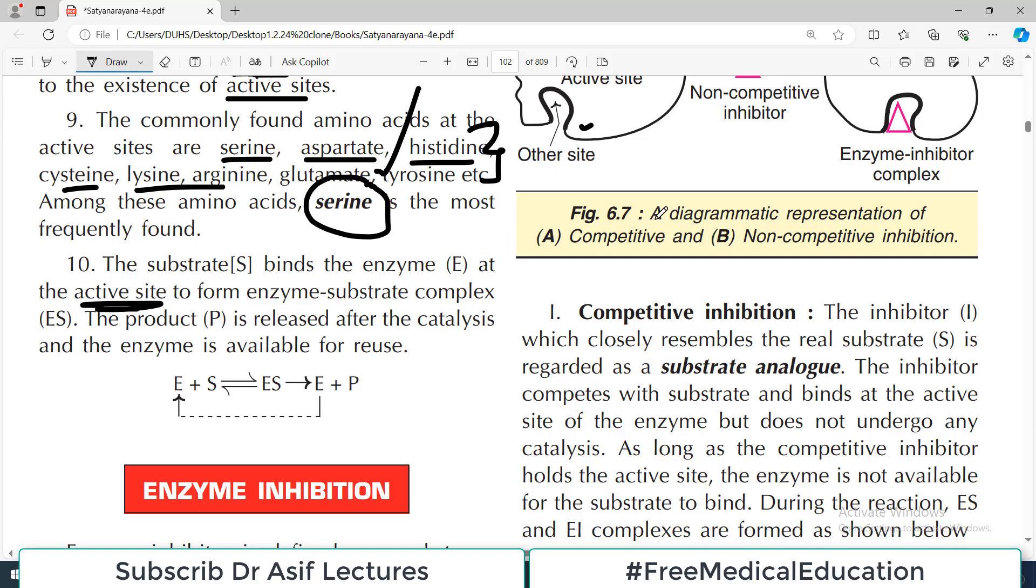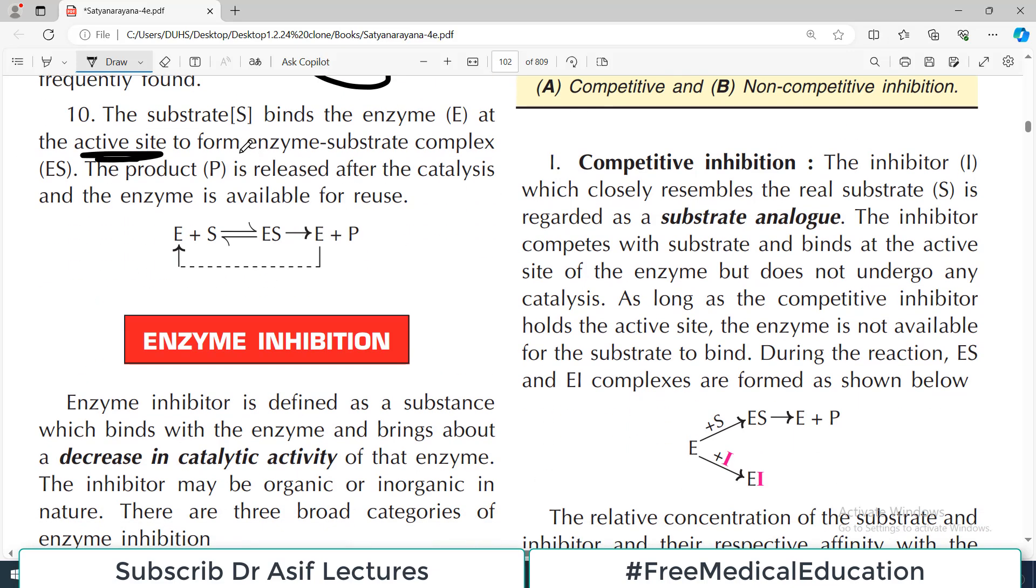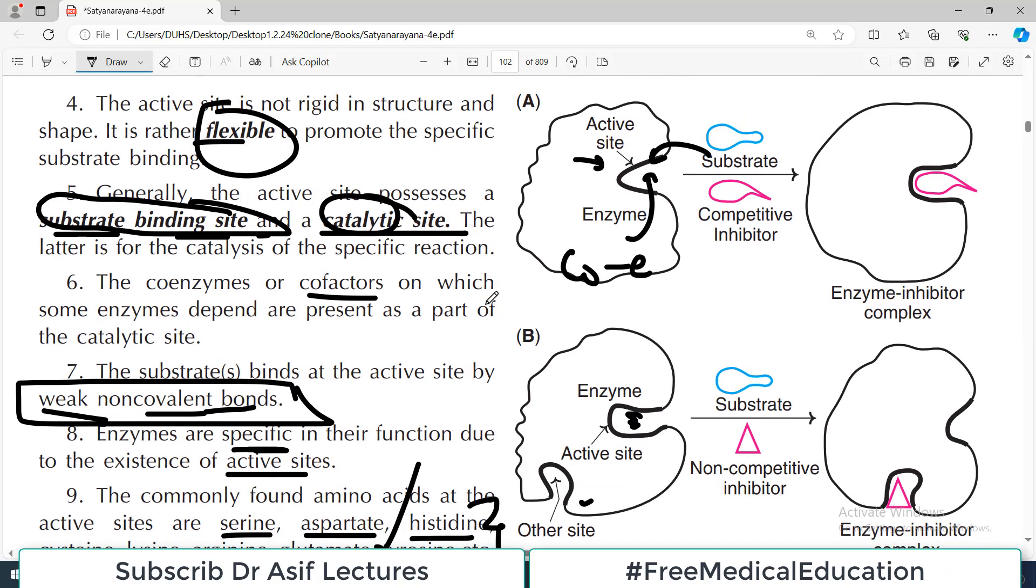The substrate binds the enzyme at the active site. Therefore it forms the enzyme-substrate complex - E is for enzyme plus S is for substrate. They bind with each other forming the intermediate which is called the enzyme-substrate complex. Then this breaks down into enzyme and the product as the chemical reaction happens. The enzyme is then free for the reaction. It binds on the active site with weak non-covalent bonds. These are all important information.